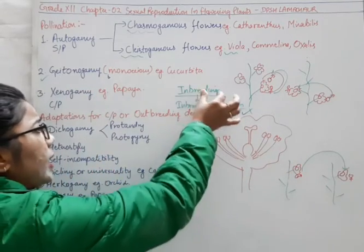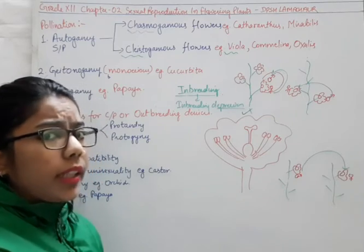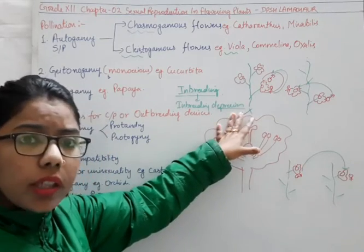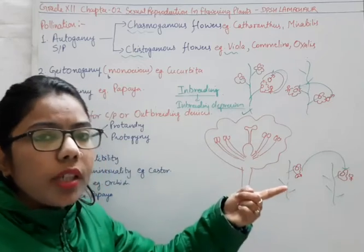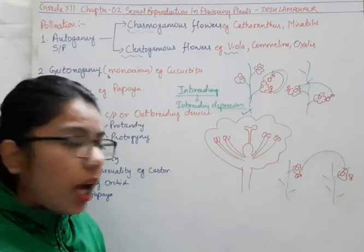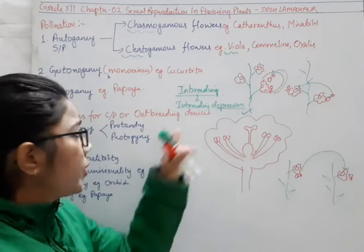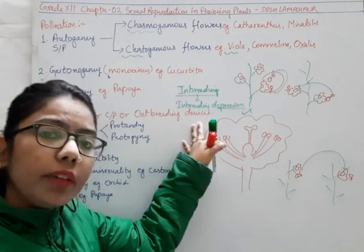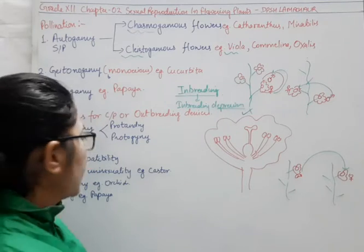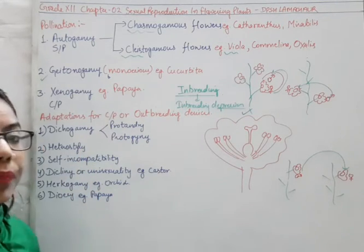So inbreeding leads to inbreeding depression. Therefore, nature will prefer to go for cross-pollination. For cross-pollination, the plants have to adapt themselves. They adapt with their outbreeding devices. The first device mentioned is dichogamy.